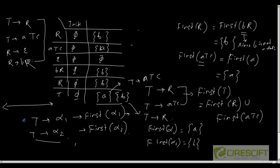So till now we have seen how to calculate the FIRST function of a given sequence of terminals and non-terminals. We have also seen that for a given non-terminal T with two possible productions alpha1 and alpha2, if FIRST(alpha1) and FIRST(alpha2) are disjoint, then we can always decide which production to select based on the next input token. If the next input token is 'a' we select T → alpha1, and if it is 'b' we select T → alpha2.